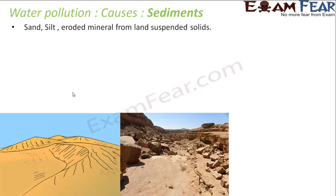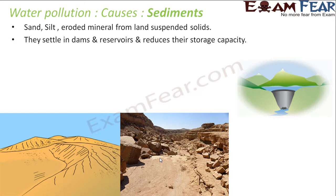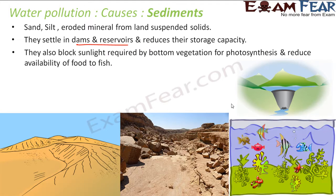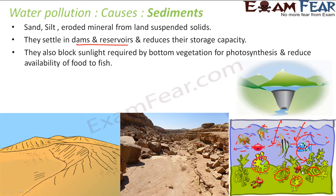The next cause is sediments — sand, silt, and eroded minerals. They settle in dams and reservoirs, reducing their storage capacity. They also block sunlight in water bodies, preventing aquatic plants from growing. Since plants don't grow, animals cannot feed on them and the food for fish is reduced. This is all a direct impact on aquatic life.